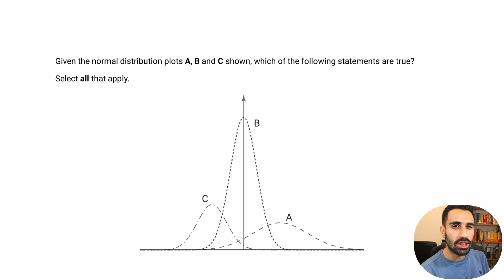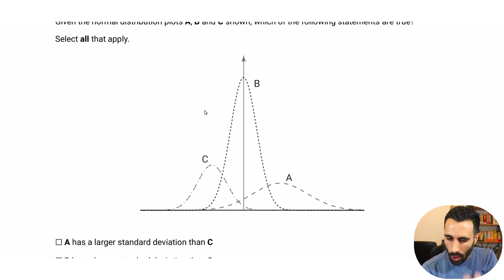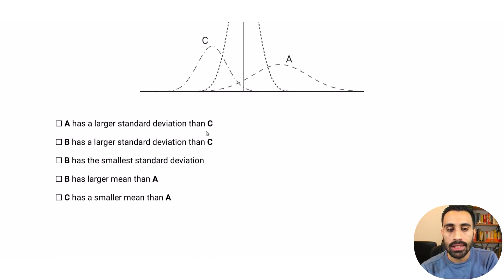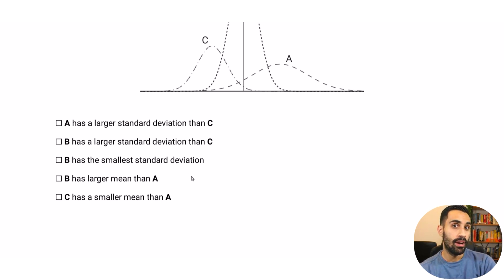I believe you've got everything it takes, and to get you started we're going to solve this FE-type question together covering normal distribution. It's a conceptual question and it's select all that apply. We're given graphs A, B, and C — analyze them, then select all the true statements. Pause the video, do this on your own, then come back and check your solution with mine.